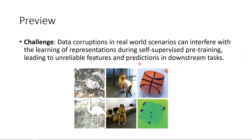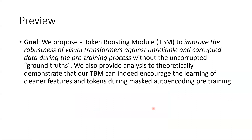We first start with a preview of the paper. Data corruptions in real-world scenarios can interfere with the learning of representations during self-supervised pre-training, leading to unreliable features and predictions in downstream tasks. Examples of such corruptions include images in adverse weather conditions, skeleton data collected with a pose-tracking algorithm, and collected depth images.